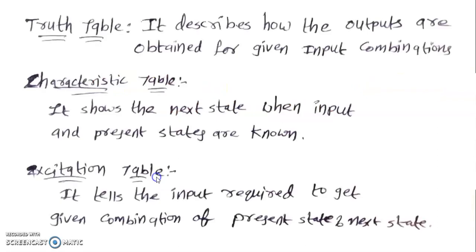Coming to the truth table, it describes how the outputs are obtained for given input combinations. This table gives the information about